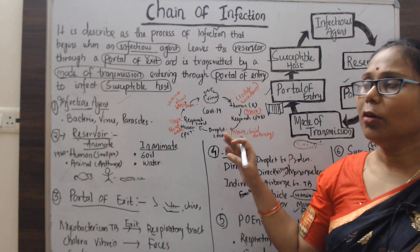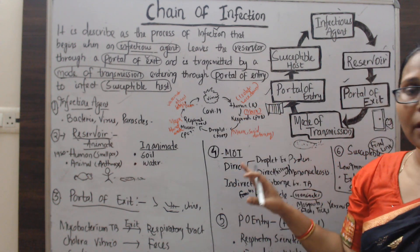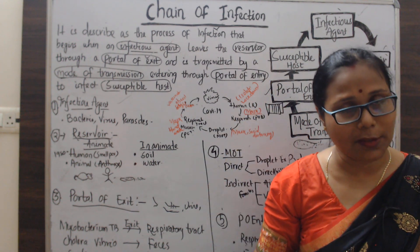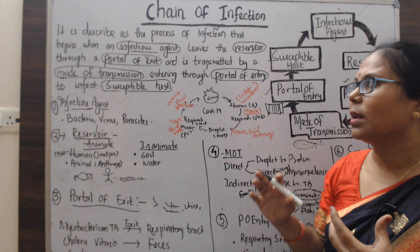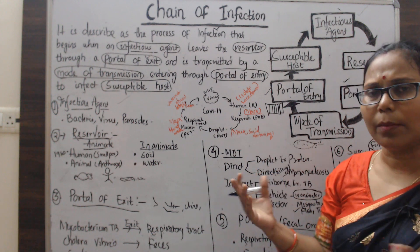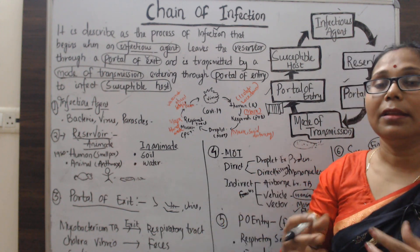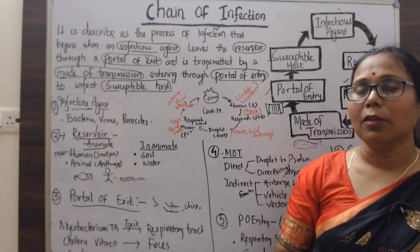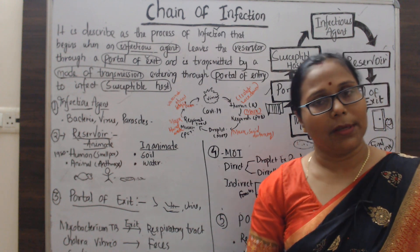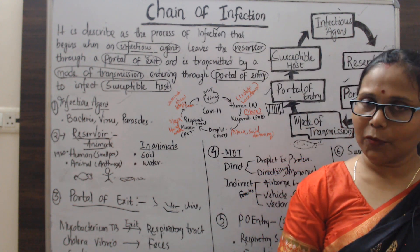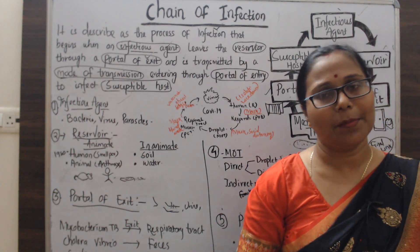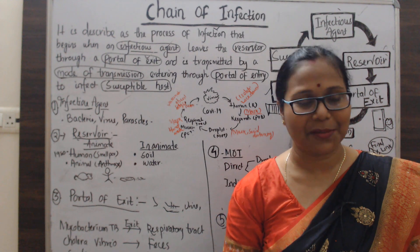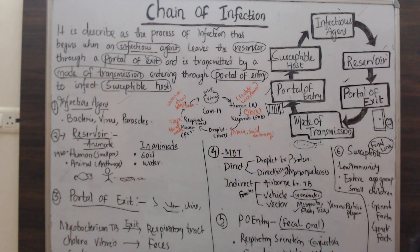So I hope you understand from this discussion what the chain of infection is — it has six components, and the linking between them is called a chain. Thank you for watching, and please keep subscribing.